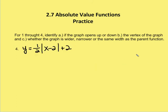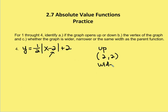Last problem. Identify whether the graph opens up or down — there's a positive A value, so the graph opens up. Finding the vertex: the H and K values are 2 and 2; remember to change the sign of the H value. Is the graph wider, narrower, or the same width? The absolute value of A is one-half, which is less than 1. If it's less than 1, the graph is wider. Those are my answers.